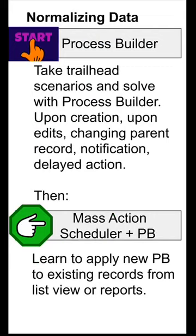After you edit, you're going to want to know how to normalize the data — that is, make it standard. Users enter data in all sorts of ways. Process Builder is your friend here. When a new record is created or it's edited, you can have Process Builder modify things. For example, take your state field: people enter it fully spelled out, or use mixed case in the two-letter abbreviation, or all uppercase spelling. All of those things can be changed using Process Builder to the correct state abbreviation. Learn how to do that.